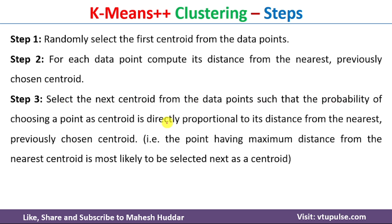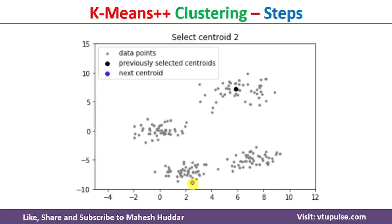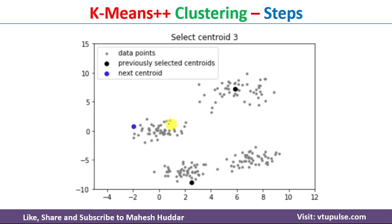The next step is to select the data point which has the highest distance from the initial centroid. For example, this particular data point has the maximum distance compared to the initial centroid, so it will be selected as the next centroid. Now we have two centroids. If we want to select one more centroid, we calculate the distance from each data point to both centroids, and the data point that is farthest from both centroids is selected as the third centroid.